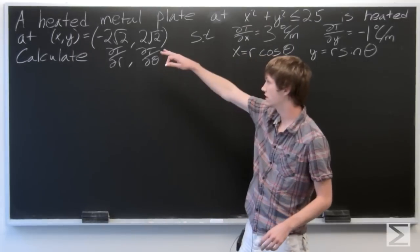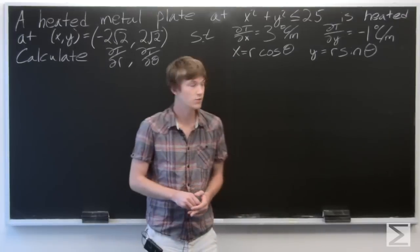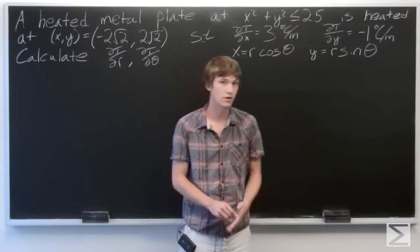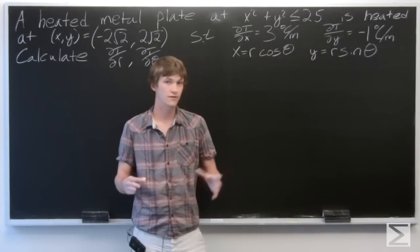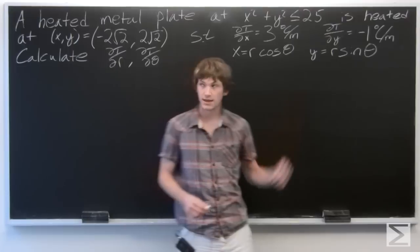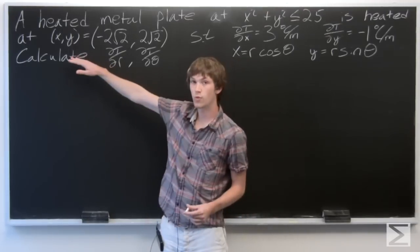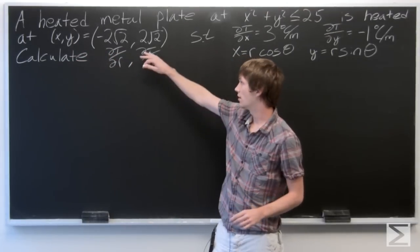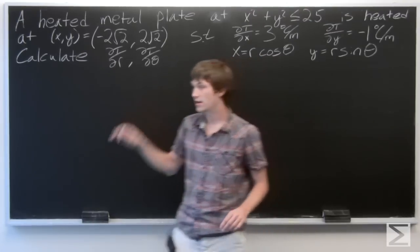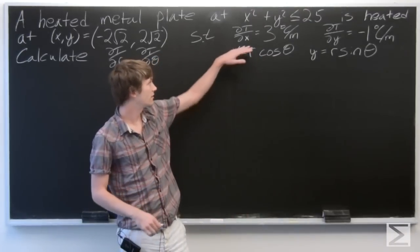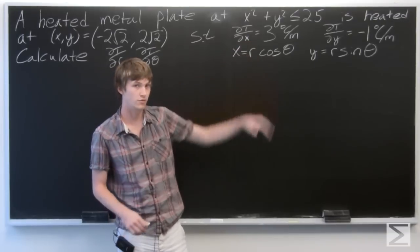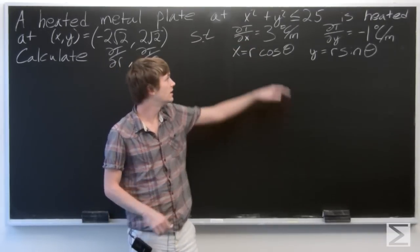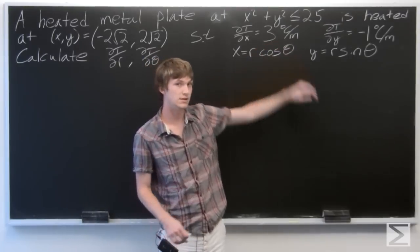In this problem, we're told that there's a heated metal plate in the xy-plane centered at x² + y² ≤ 25, so it's a disk of radius 5. It's heated at the point (x, y) = (-2√2, 2√2), such that the partial derivative of the temperature with respect to x is equal to 3 degrees Celsius per meter.